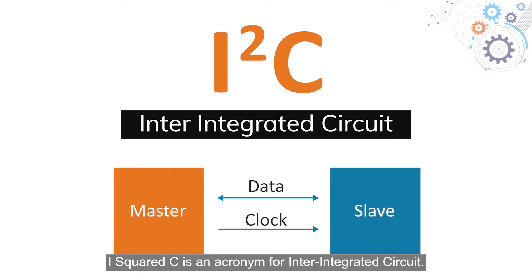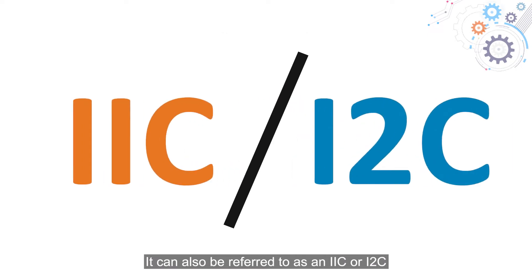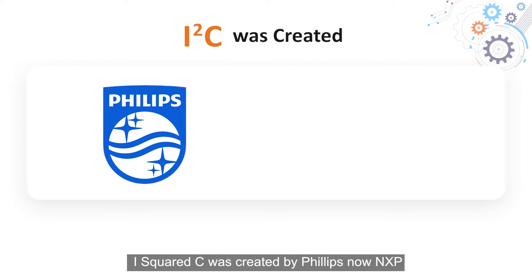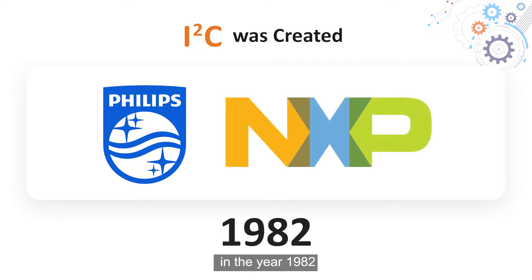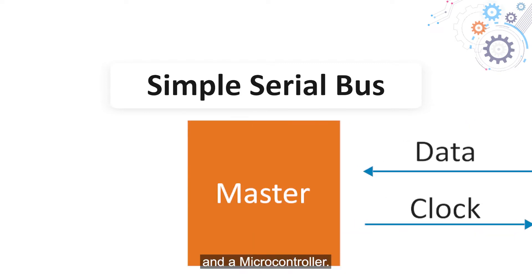I2C is an acronym for Inter-Integrated Circuit. It can also be referred to as IIC or I2C. I2C was created by Philips, now NXP, in the year 1982. As a simple serial bus, I2C provides robust serial communication between a peripheral device and a microcontroller.